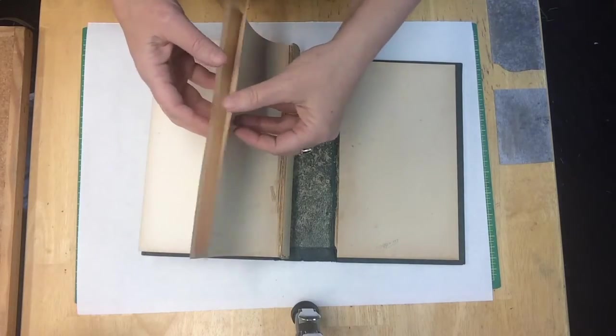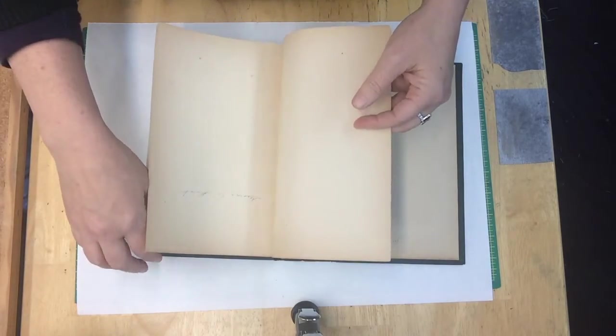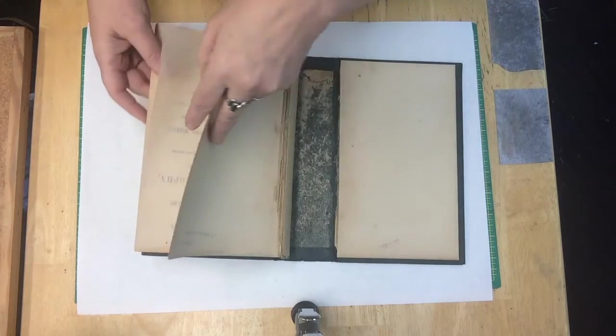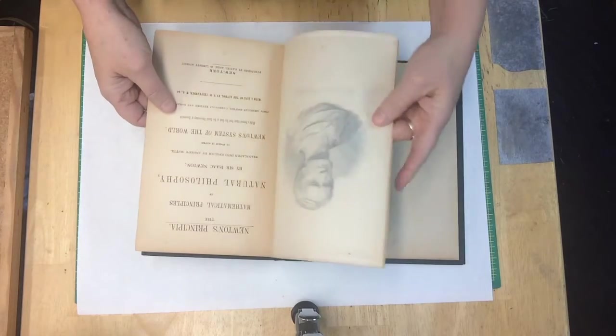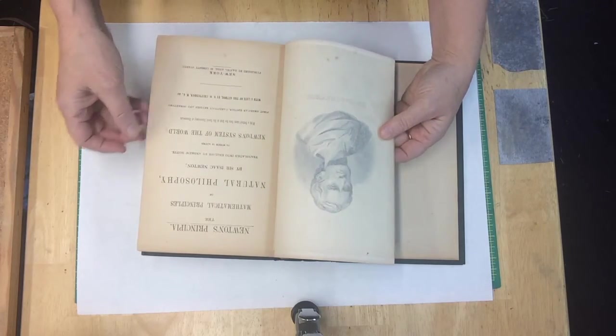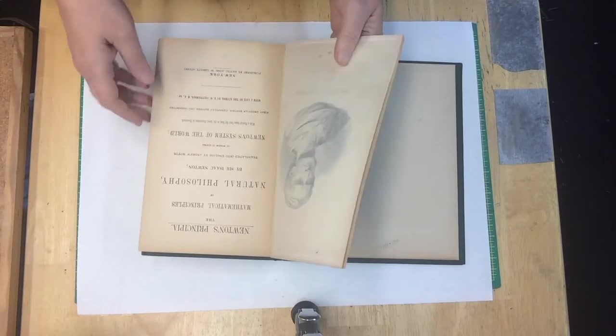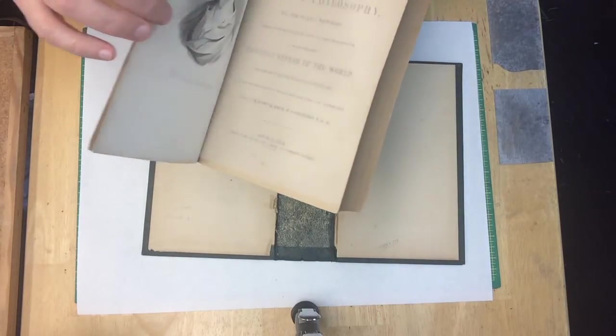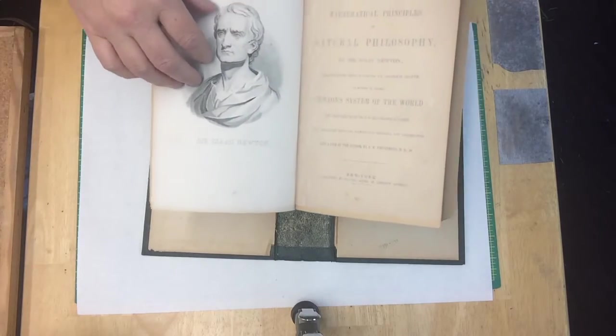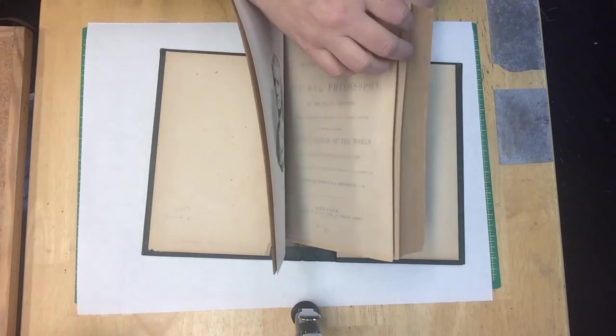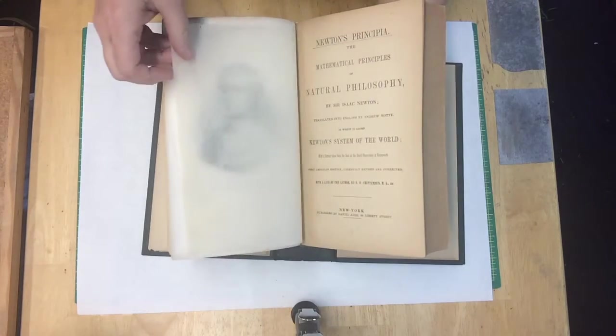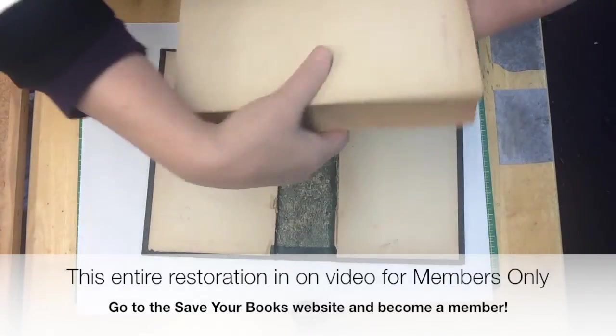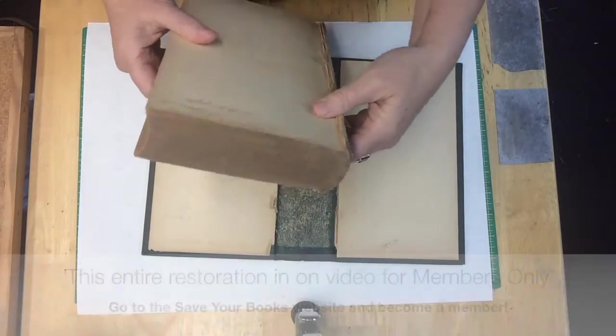The book is Newton's Principia, which is rather famous in the scientific world. And I can assume that it's worth more than a couple hundred bucks, which is all it's going to take to get this fixed. Unless something goes wrong. Hopefully nothing will go wrong.